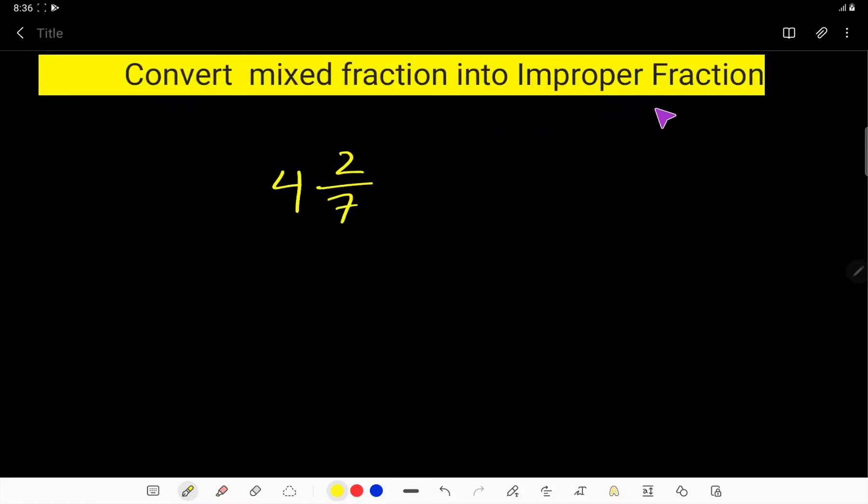Convert mixed fraction into improper fraction. This is a mixed fraction, right? This is the whole number part and this is the fractional part. So to convert this mixed fraction to improper fraction, at first we have to multiply the whole number to the denominator and then we have to add the numerator.